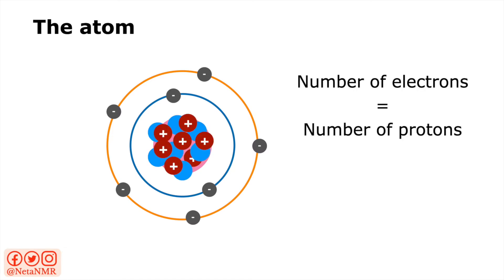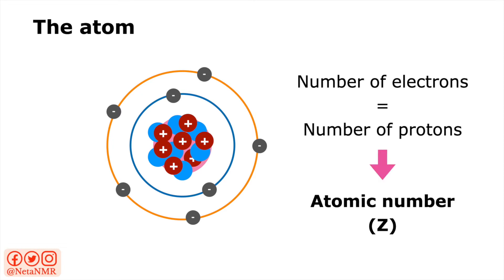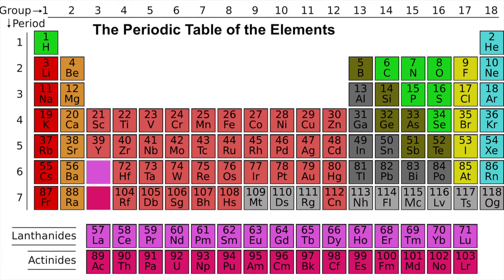The number of electrons around the nucleus is equal to the number of protons inside the nucleus, and this gives us the atomic number — the number of protons in the nucleus. This is a number specific to each element in the periodic table, and the elements are organized by increasing atomic number. So if we look at the first element, that's hydrogen, and the number shown above it is its atomic number — for hydrogen, the atomic number is 1.